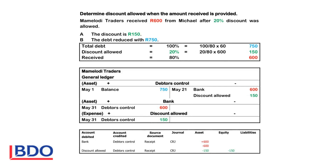Mama Lordi Traders received 600 Rand from Michael after 20% discount was allowed. The total debt is 100%, the discount allowed is 20%, and we received 80%. The amount received is 600 Rand, which equals 80% of the total debt. To calculate the discount, we take the percentage we want, 20, divided by the percentage we know, 80, times 600, which gives us 150 Rand.